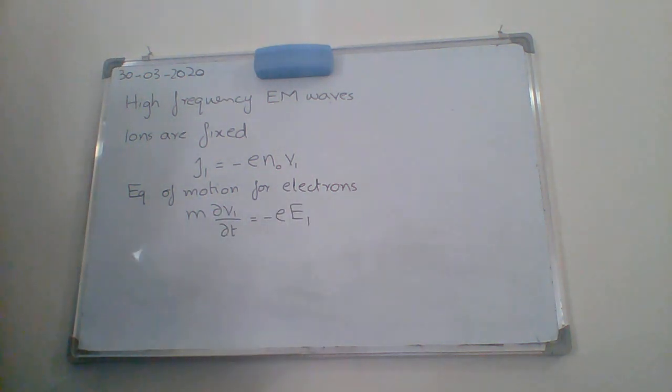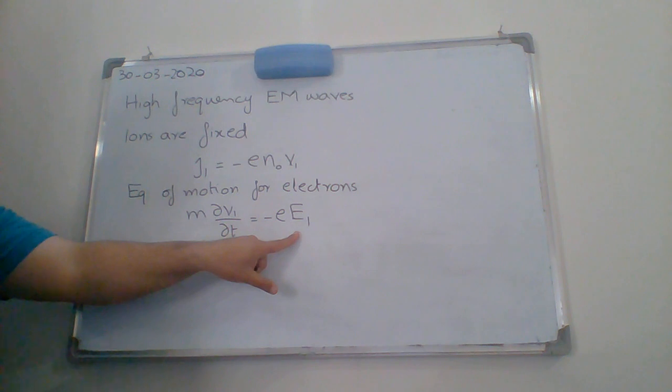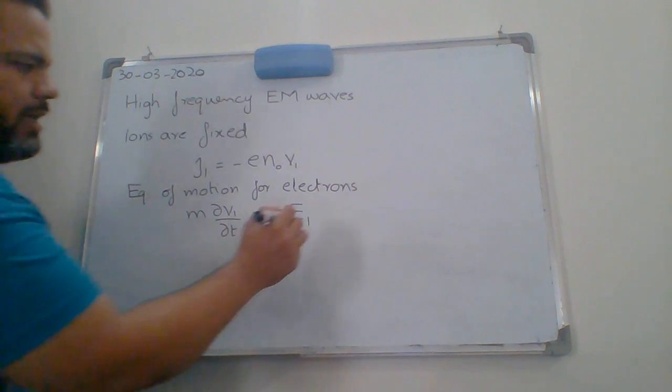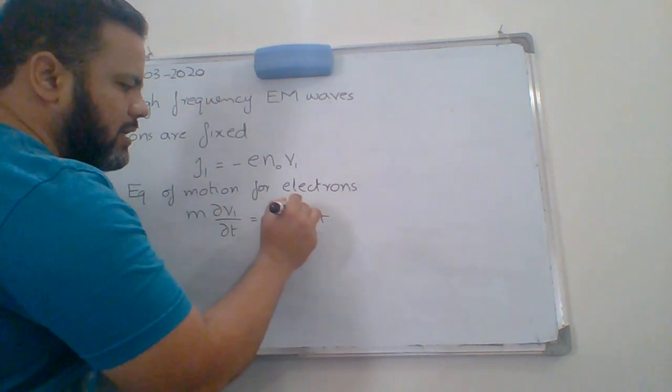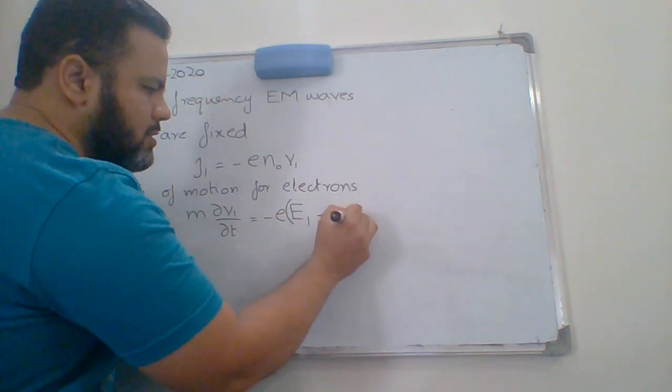As you already know that on the left side we also have V dot del V, and as we don't have any V naught, that term is going to vanish and we are left with only this term. And on the right side we have only this electrostatic electric field part and there is no V cross B.